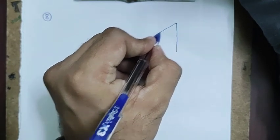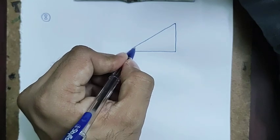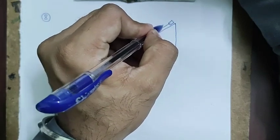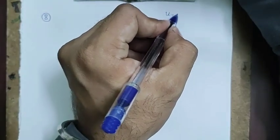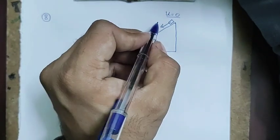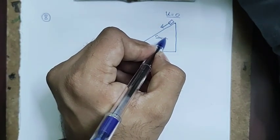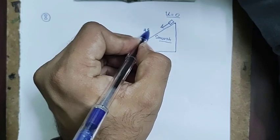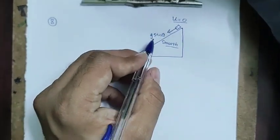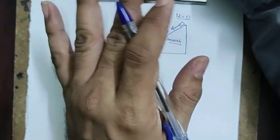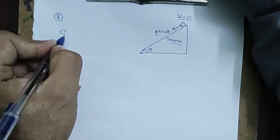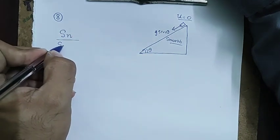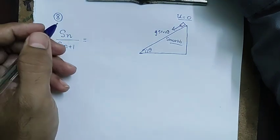Question 8 is from laws of motion. A body starts from rest on a smooth inclined plane with acceleration g sin θ (constant). We need the ratio of distance covered in the nth second to distance covered in the (n+1)th second.